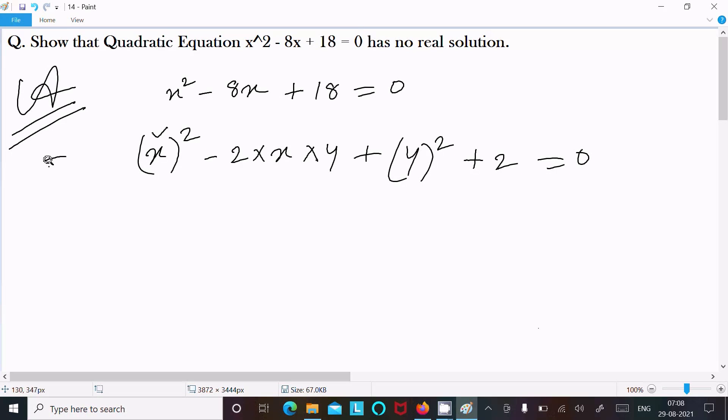Now after that, we can write x minus 4 whole square. a square minus 2ab plus b square. x minus 4 whole square plus 2 equal to 0.